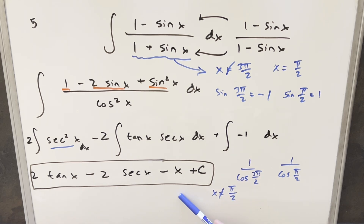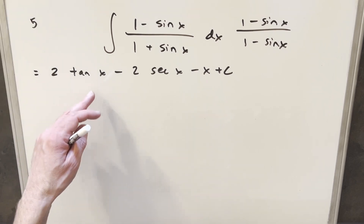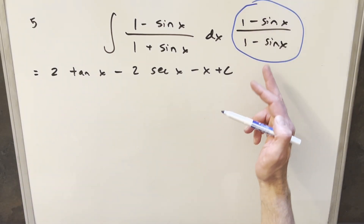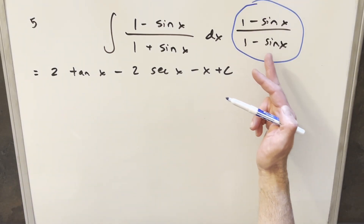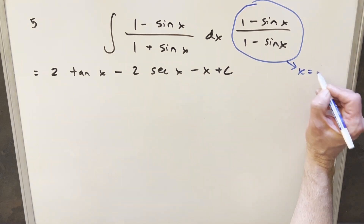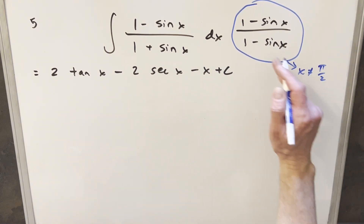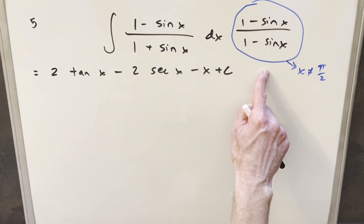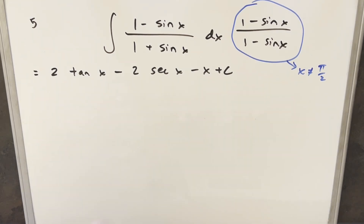The domain of our solution is not the same as the original problem. Ideally, we clean this up and get it to something with the same domain as our original problem. The very first step is actually where we introduced the issue: when we multiplied in (1 minus sine x), we can't have x equal to π/2 because then we're dividing by zero there. So we need to undo what we did here somehow.